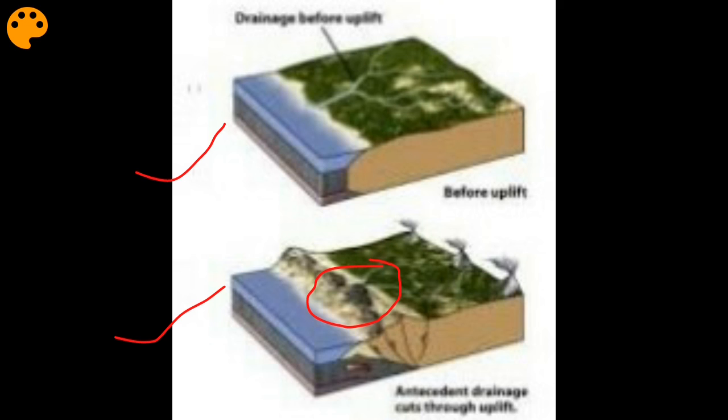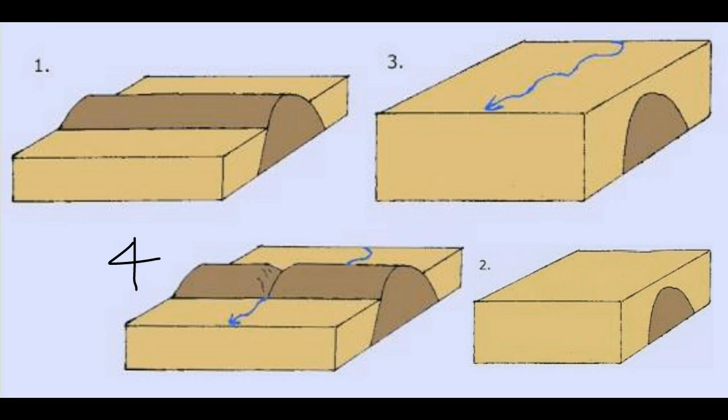Now superimposed river. Superimposed rivers were not present before the underlying rock topography. As you can see here, the land was like this earlier, but over the years it was covered with depositions and it looked like this, and over it river started to flow.